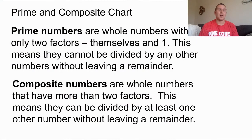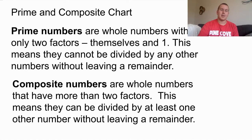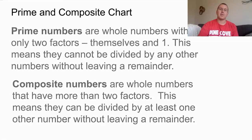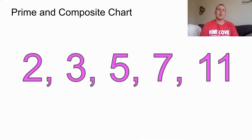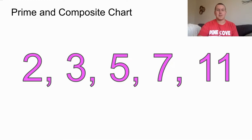Prime and composite numbers are extremely important. There's also something else that's extremely important for you right now, and that is that you memorize the first five prime numbers. Those numbers are 2, 3, 5, 7, and 11. It'll be really helpful throughout the school year if you can have these five memorized.